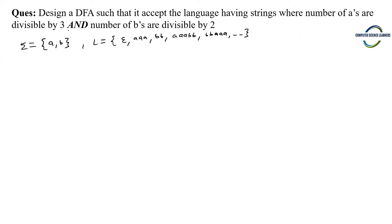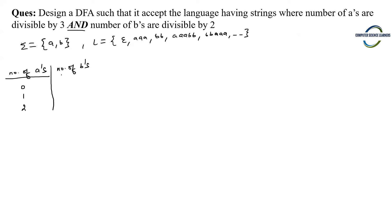In such kind of problem, the main thing to consider is: we are dividing the number of a's by 3 and the number of b's by 2, and we go with the remainder. When dividing any number by 3, the possible remainders are 0, 1, and 2. When dividing any number by 2, the possible remainders are either 0 or 1. We will be creating combinations of these two, giving us 6 total combinations.